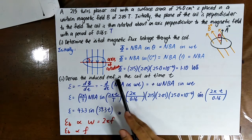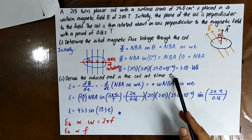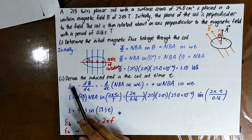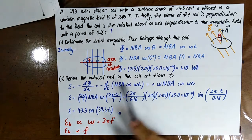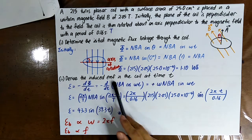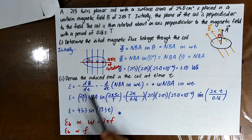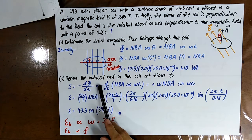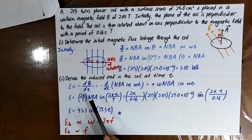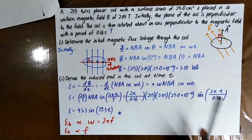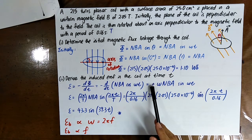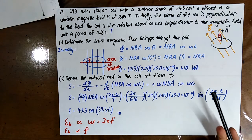Now derive the induced EMF in the coil at time t. You know that φ = NBA·cos(ωt). You differentiate this with respect to time. Don't forget the negative sign because it represents Lenz's law. When you differentiate the cosine function, you get a negative sine function, so the negative signs cancel out.